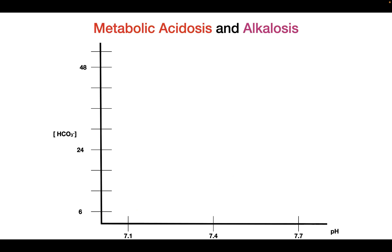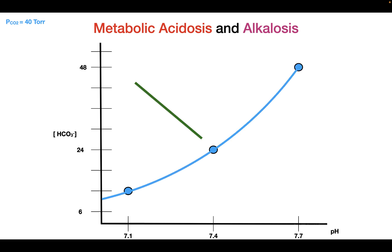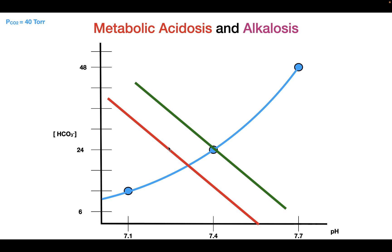Now, what about metabolic acidosis and alkalosis? For metabolic acidosis and alkalosis, we're going to look at the bicarbonate buffer curve for 40 Torr and draw our base non-bicarbonate buffer line. A metabolic acidosis would be a downward shift of the green curve here, and this would produce a pH that is lower than 7.4.